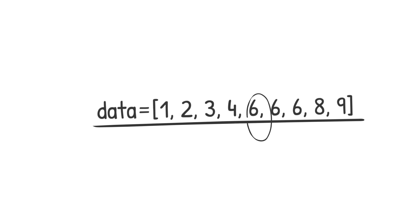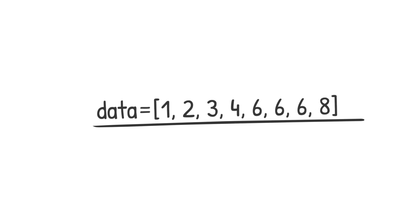Suppose we had 8 data points instead of 9. Here is how the dataset with 8 points arranged from smallest to largest would look like. The middle two numbers are 4 and 6, and the average of the two is 5, which is the new median of the dataset.